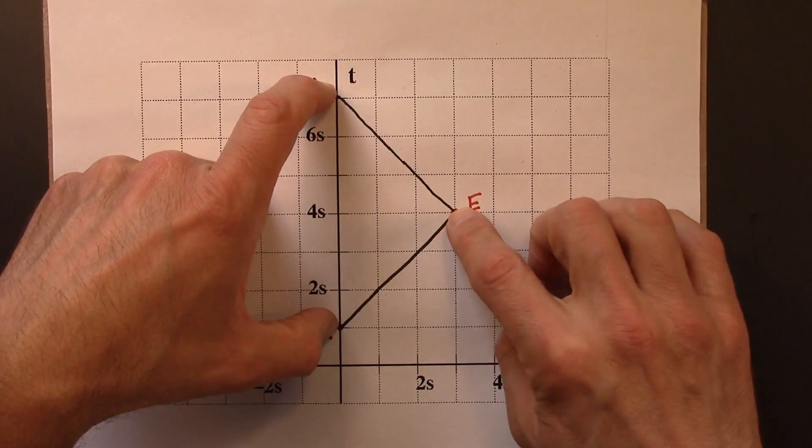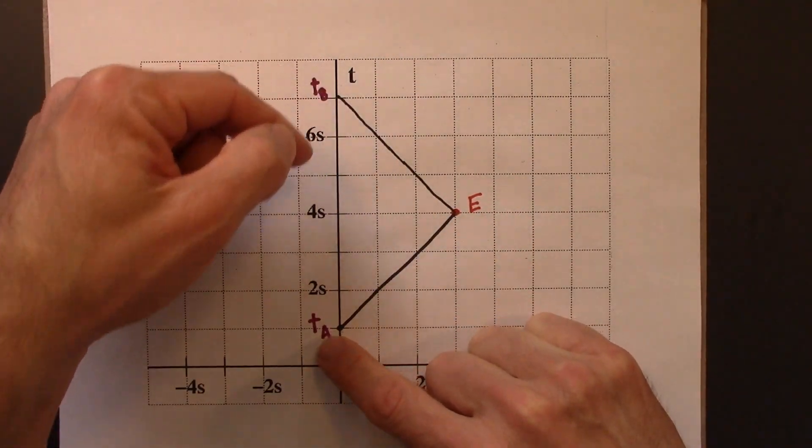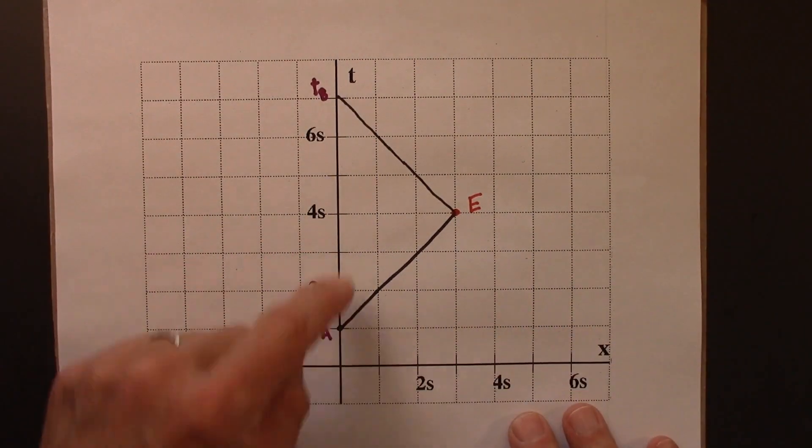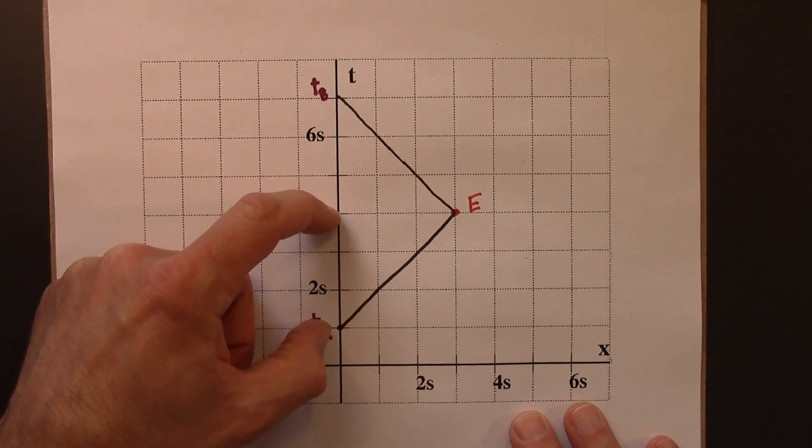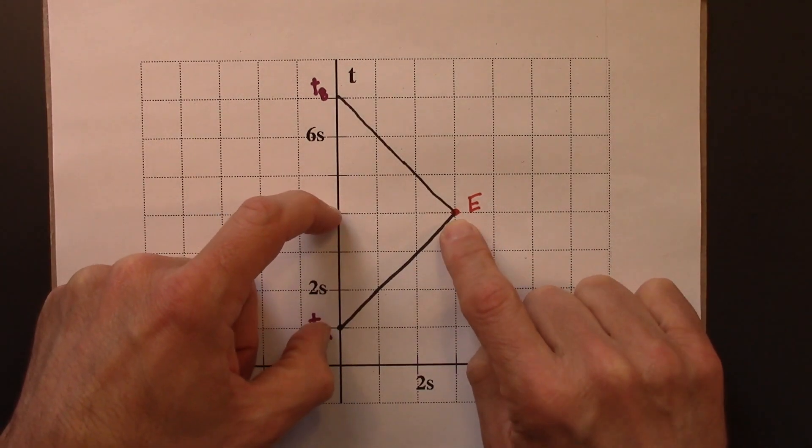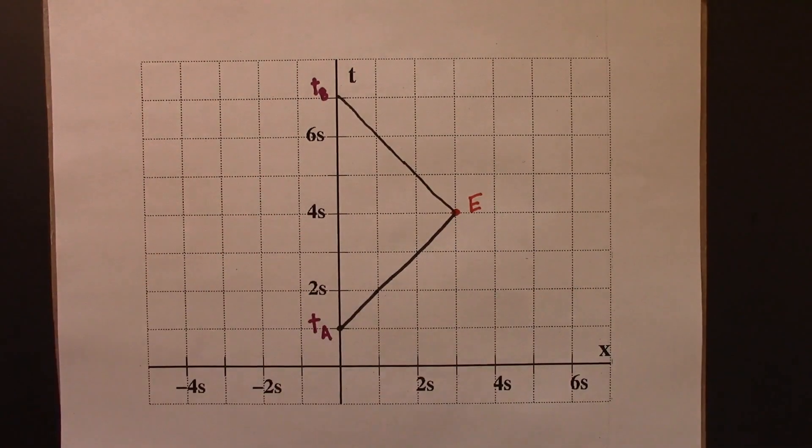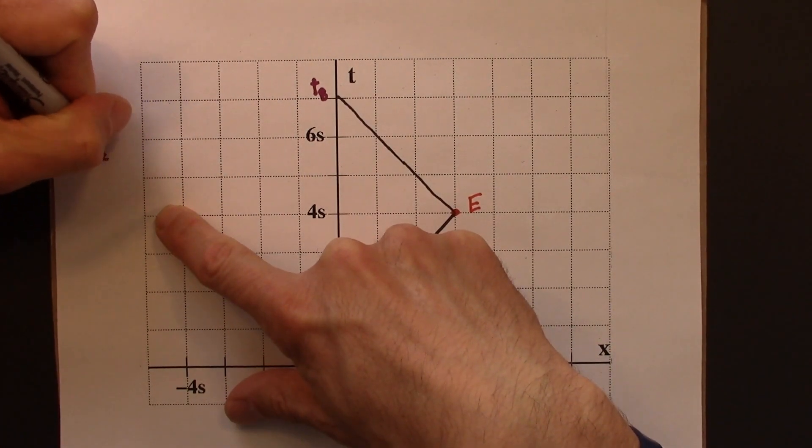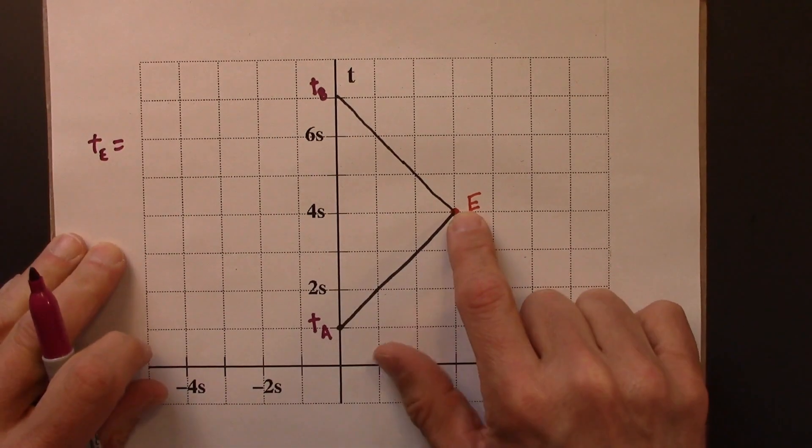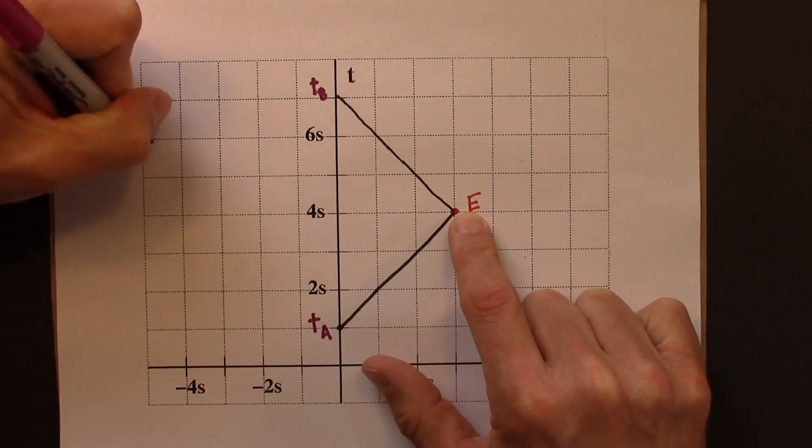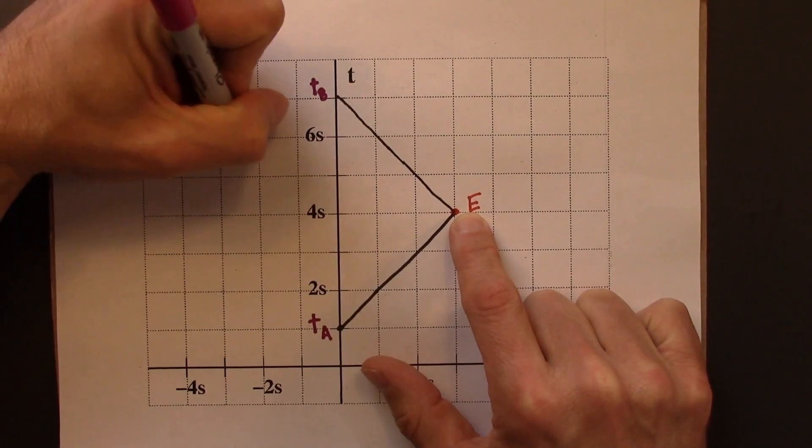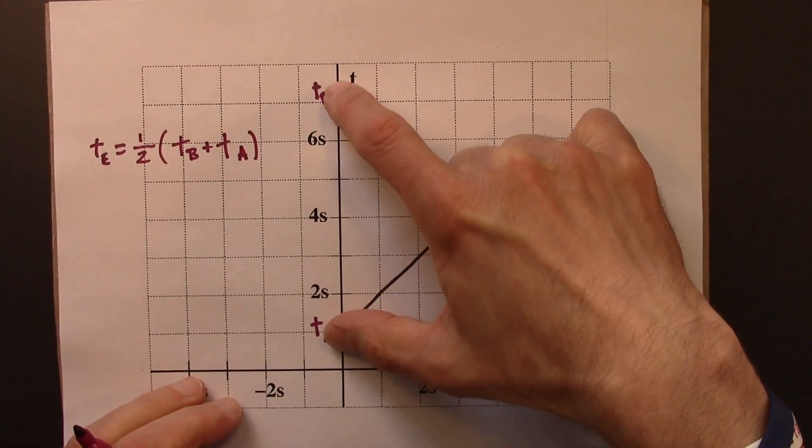So the time at which this occurred, well that's going to be halfway between TA and TB. In this case, this is one and that's seven. Halfway between is four. So the time coordinate of event E is four seconds. TE, the time of this event, is the halfway point. It's just the average of these two.